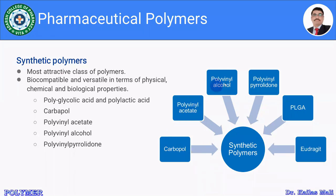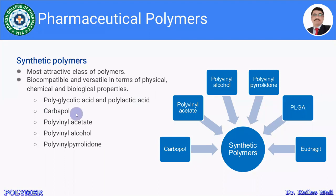Apart from Carbapol and Eudrazit, other synthetic polymers include polyvinyl acetate, polyvinyl alcohol, polyvinyl pyrrolidone, and one most important polymer — PLGA, polylactic-co-glycolic acid. PLGA is a biocompatible and biodegradable polymer widely used in parenteral drug delivery systems. Let us now discuss these synthetic polymers one by one.